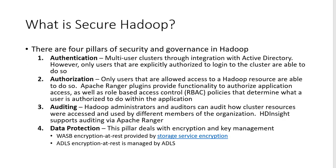Let's jump into the first part: what is secure Hadoop. There are four pillars for securing Hadoop and capturing the requirements within Hadoop that govern its security. These four pillars are: authentication, authorization, auditing, and data protection. I'm sure you are familiar with these terminologies from other resources, but the main focus here is around Hadoop.